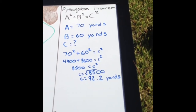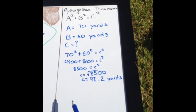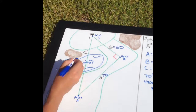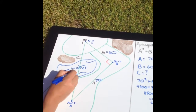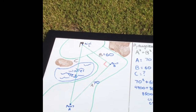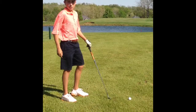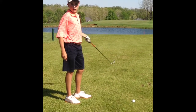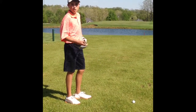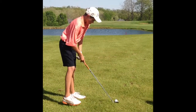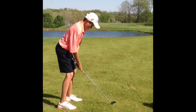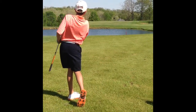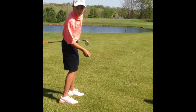We have to take the square root of 8,500 to cancel out the squared with C. That comes out to be 92.2 yards, or we can round to 92 yards. Now that we've done the Pythagorean theorem and figured out our hypotenuse from the ball to the center of the green, I've been able to pick my club and hit the shot. That's money.